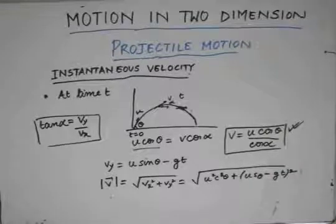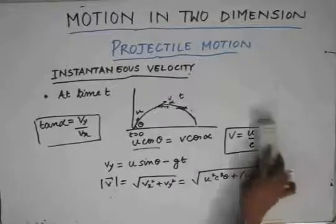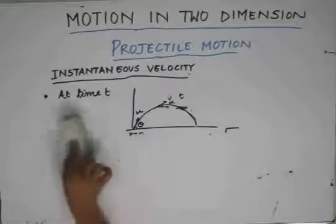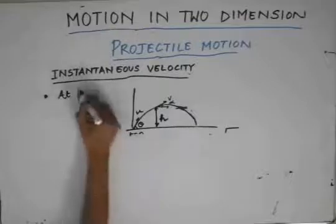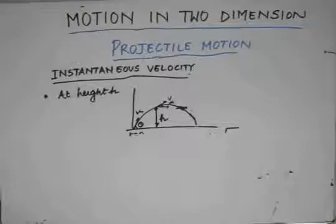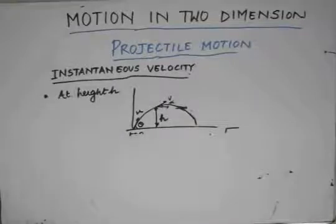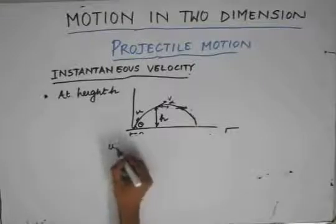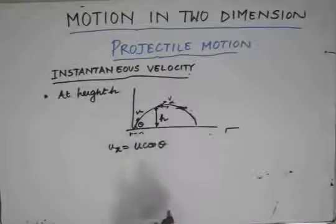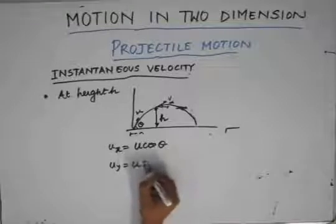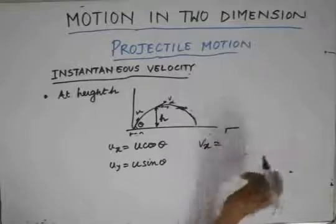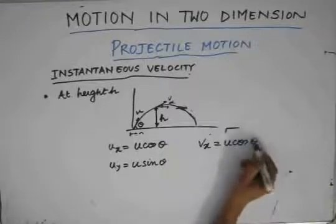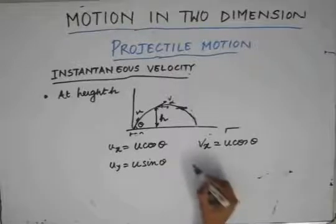That was the calculation of instantaneous velocity at some instant of time t. Now let us move into a different case where we find the instantaneous velocity at some height h — we no longer talk in terms of time t but in terms of height h. The initial velocity is u making an angle θ with the horizontal, so the horizontal component is u cos θ and the vertical component is u sin θ. Since the horizontal velocity is constant, it remains u cos θ at any instant.